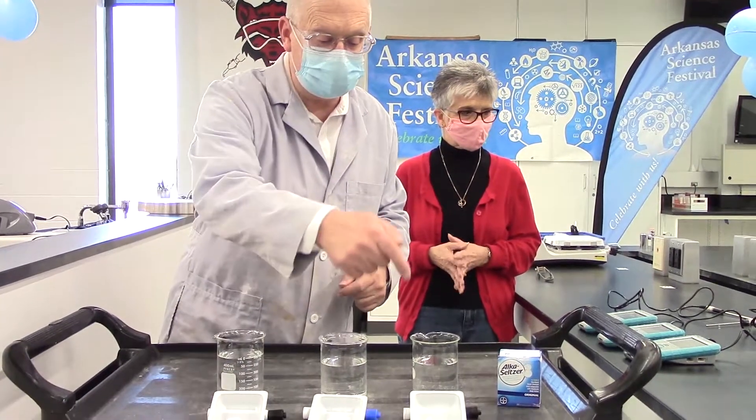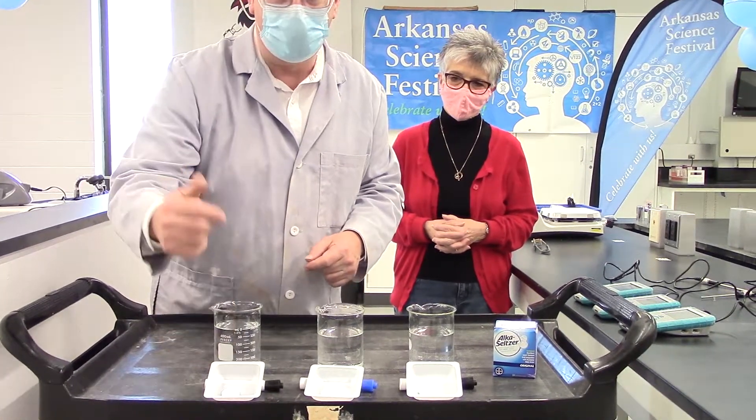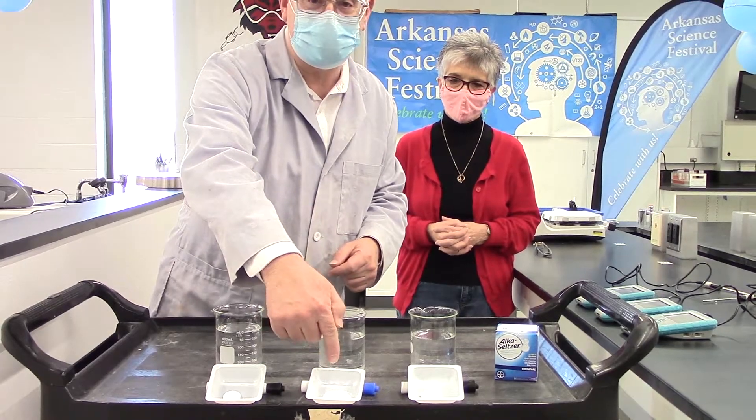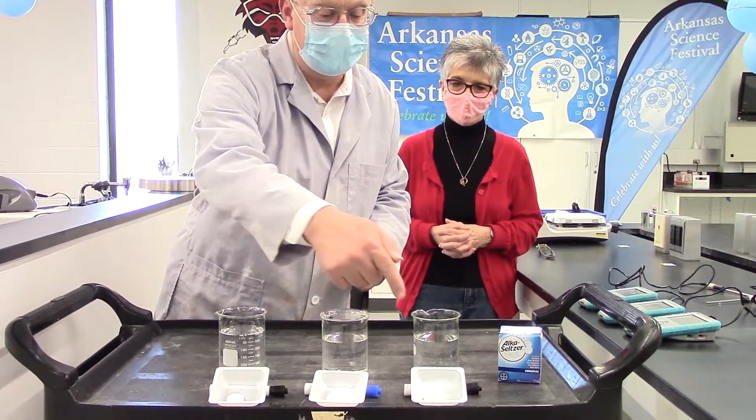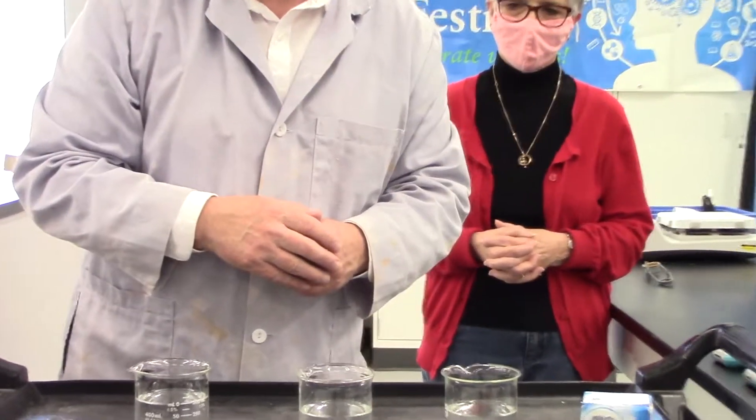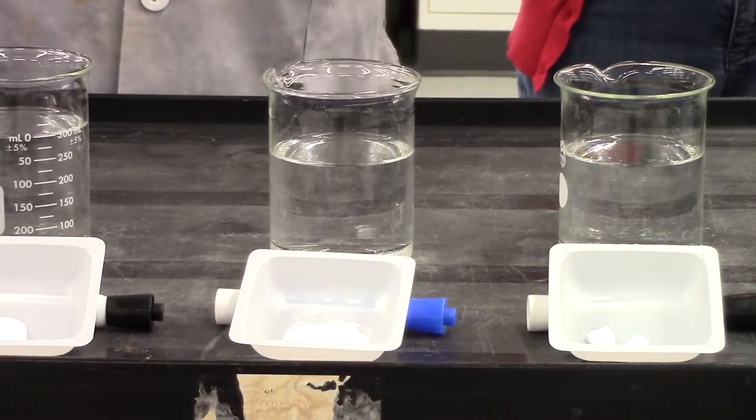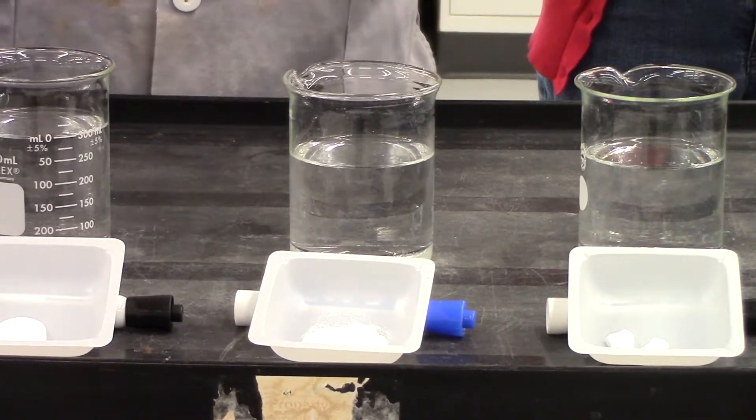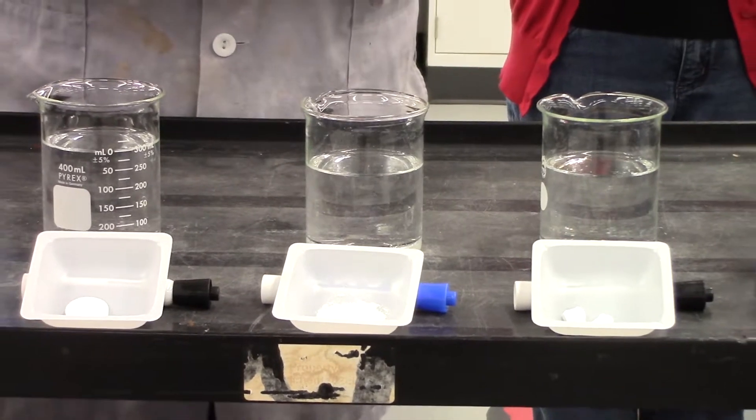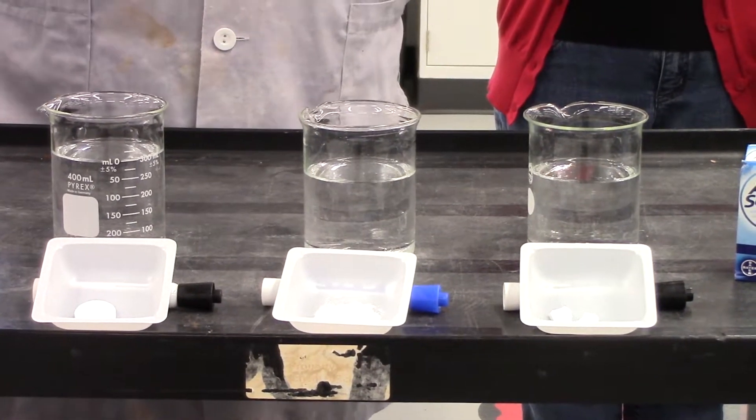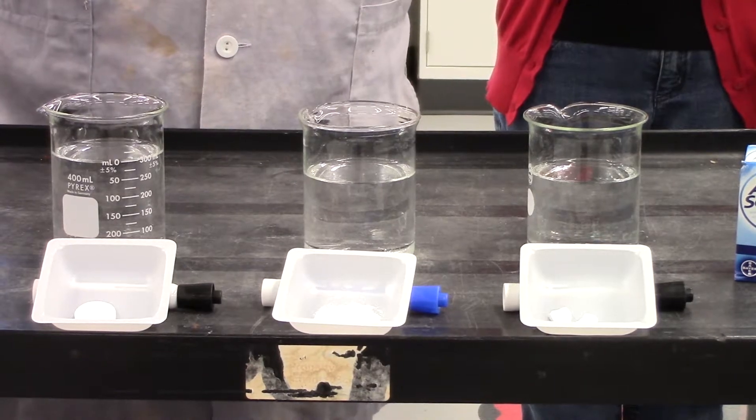We're going to see the effect that surface area has. If you look in front of me, I have three Alka-Seltzer tablets. One's whole, one's been crushed up very fine, and the other one's been broken up into little pieces. When we put these in this water—and this is just tap water, straight out of the tap, nothing special—it's going to produce a gas called carbon dioxide, the stuff you see in your soda.